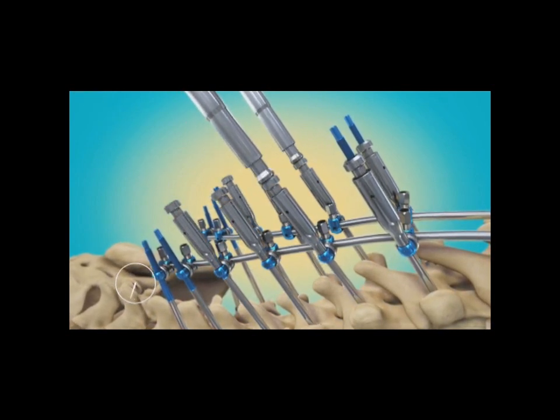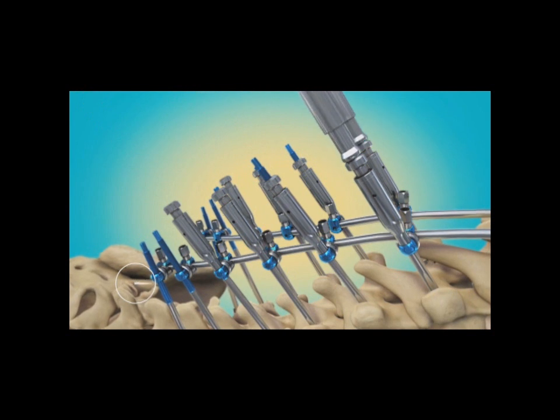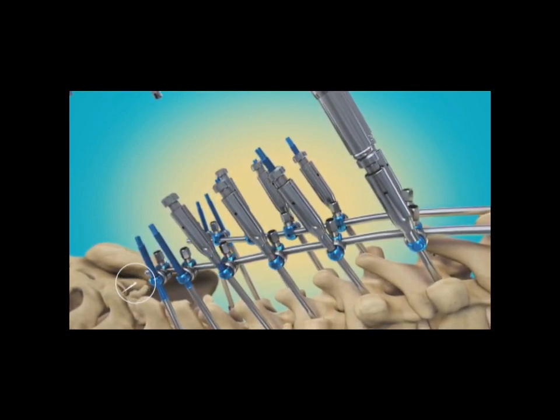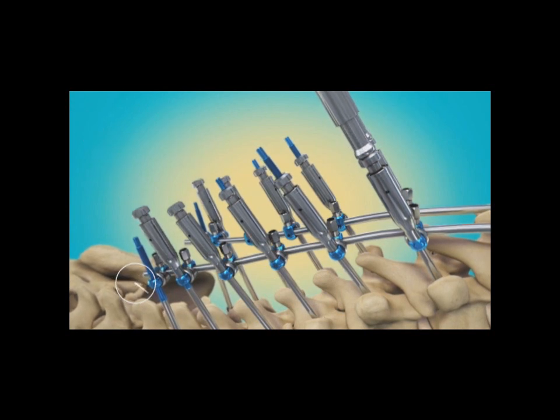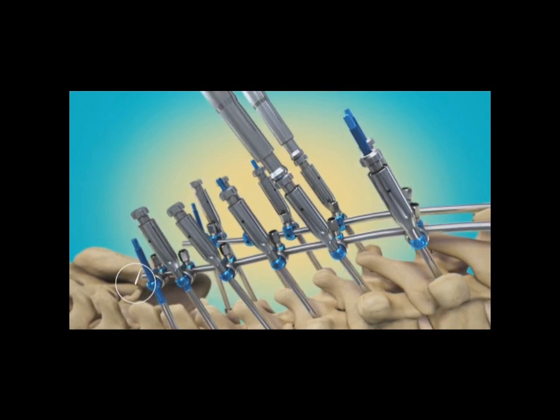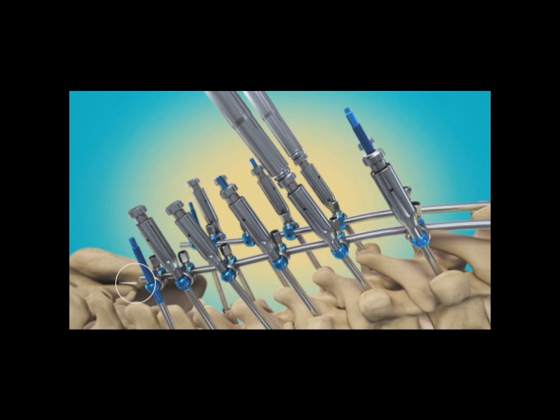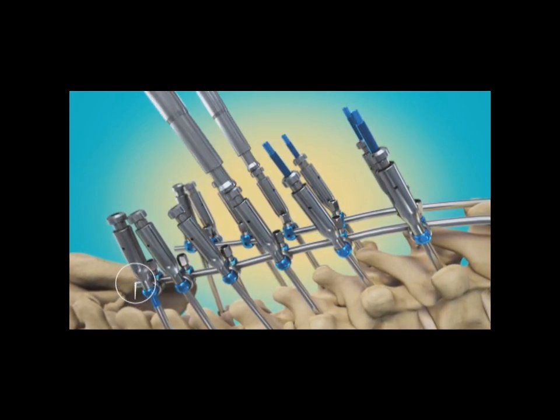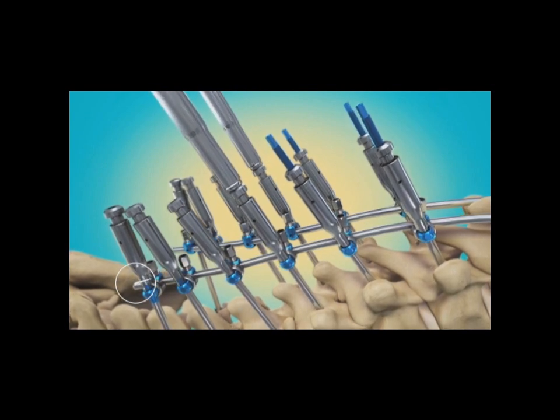As soon as the further distal or toward the low back, as soon as those screws are available, the crimps are placed and those screws are gradually incrementally slowly tightened to slowly and very safely bring the spine up to a more straightened posture.